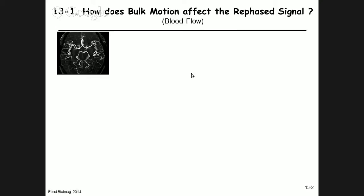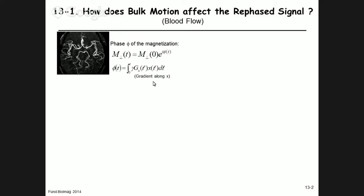How does bulk motion affect the signal of an echo? We'll consider MRI angiograms depicting flowing blood in the brain. To analyze this, consider the phase of the magnetization — the transverse magnetization in complex notation — which undergoes phase evolution as a function of time. In general, for a gradient this is given by the integral of the gradient times position as a function of time, multiplied by the gyromagnetic ratio.